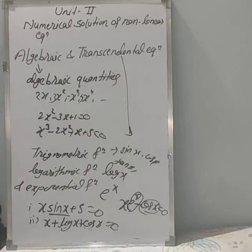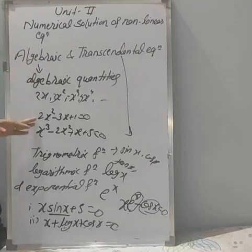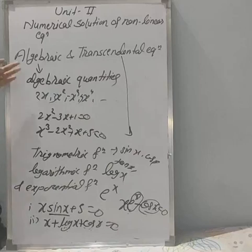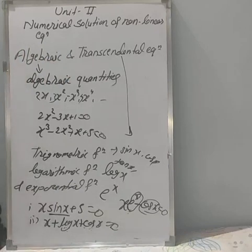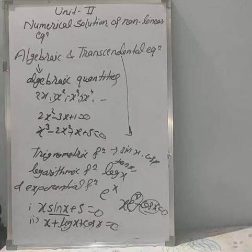For exam purposes, they may ask you to define algebraic and transcendental equations with examples, or to write the differences between them. Write the definition of algebraic equation with one example, and write the definition of transcendental equation with one example. If they ask for differences, write the definitions as the first difference and the examples as the second difference.